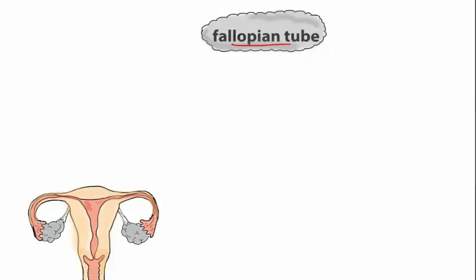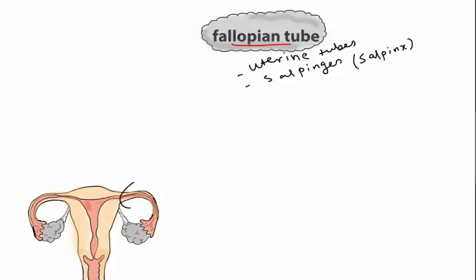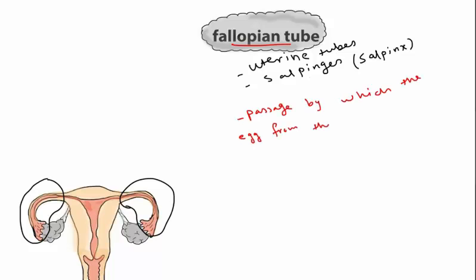The fallopian tube — also known as the uterine tube or salpinges (salpinx in singular) — gives rise to related clinical terms: inflammation of the fallopian tube is called salpingitis, and surgical removal of the fallopian tube is called salpingectomy. There are two fallopian tubes.